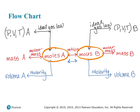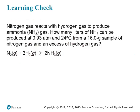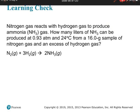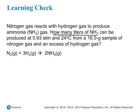Let's apply this to another problem using the ideal gas law. We have a reaction between nitrogen gas and hydrogen gas producing ammonia gas, NH3. How many liters of NH3 can be produced at 0.93 atmospheres and 24 degrees Celsius from a 16-gram sample of nitrogen gas and an excess of hydrogen gas? We're given pressure of NH3: 0.93 atmospheres, and temperature: 24 degrees Celsius.